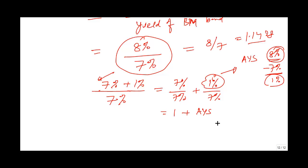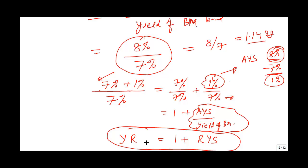The 7% in the denominator is the yield of the benchmark bond. Absolute yield spread divided by yield of the benchmark bond is the relative yield spread. Therefore, yield ratio equals 1 plus relative yield spread.